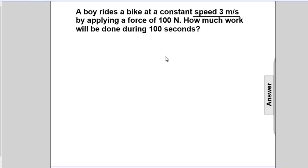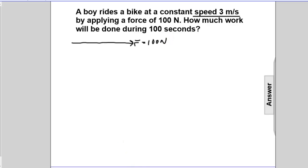In this problem, a boy rides a bike at a constant speed of 3 meters per second and applies a force of 100 newtons. That force is unbalanced. The question is: how much work is done in the first 100 seconds? Draw a picture of this using vectors. So initially, there's a force acting in this direction, and that force is 100 newtons. This bike rider will travel with some speed — let's call it S — of 3 meters per second.